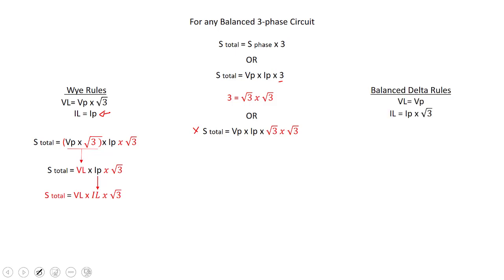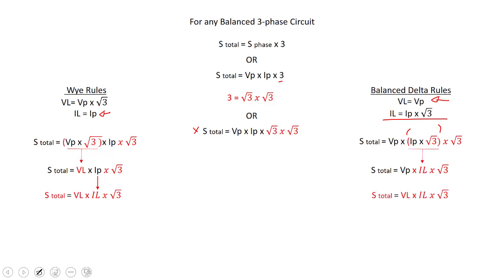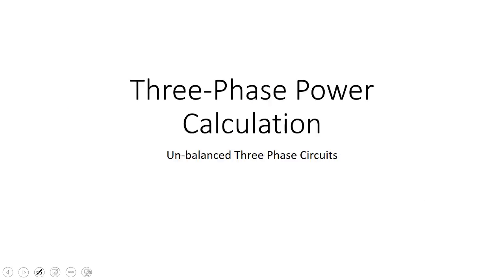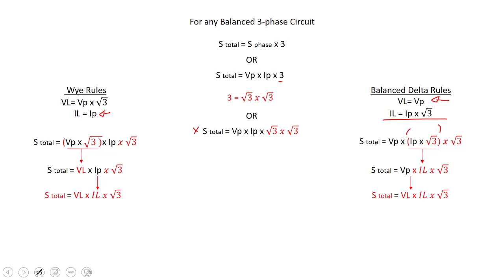For delta, V_line equals V_phase and I_line equals I_phase times root 3. Writing out S total equals V_phase times I_phase times root 3 times root 3, if I take I_phase and multiply it by root 3 I get I_line. So S total equals V_phase times I_line times root 3. Since in delta V_line and V_phase are the same, substituting V_line gives S total equals V_line times I_line times root 3.